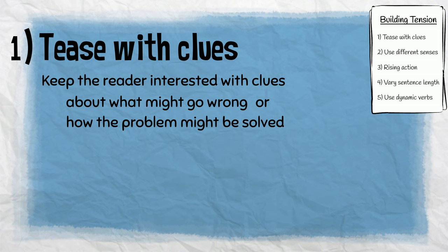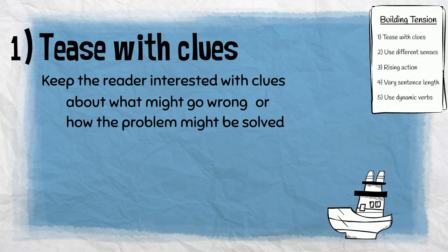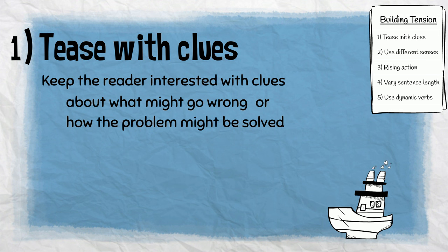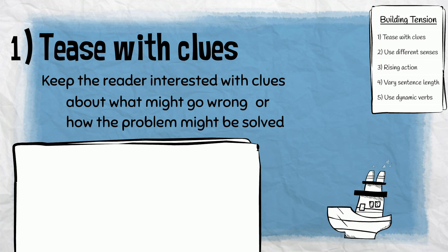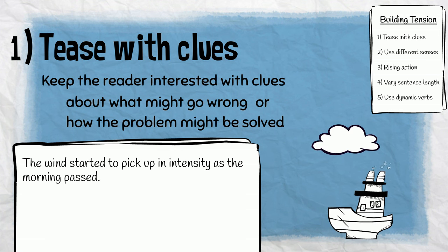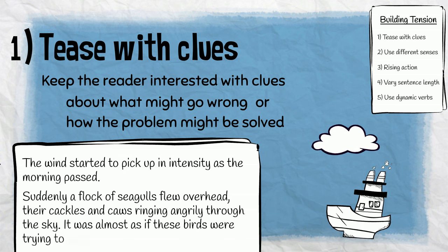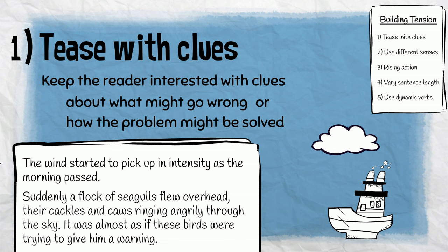For example, let's imagine a story in which our character, Greg, is on board a small boat and gets stuck in a fierce storm. We could begin building tension before the storm hits. Here are some sentences we could use to tease the reader with clues: "The wind started to pick up in intensity as the morning passed. Suddenly, a flock of seagulls flew overhead, their cackles and caws ringing angrily through the sky. It was almost as if these birds were trying to give him a warning."